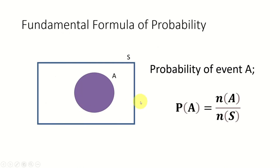Now let's move on to the fundamental formula of probability. This is a fundamental formula, so you don't need a proof because it is intuitive — basic common sense. If you have an event A which is inside your sample space, we say that the probability of event A happening equals the number of elements in event A divided by the number of elements in the sample space.